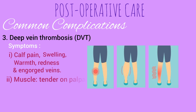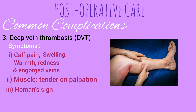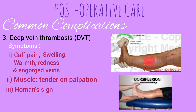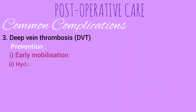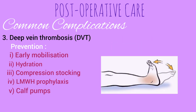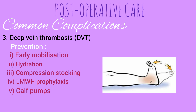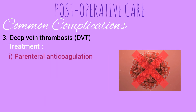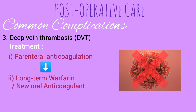Mostly DVT doesn't cause any symptoms, but when it does it can cause calf pain, swelling, warmth, redness, and engorged veins. The muscle may be tender on palpation, and Homan's sign — discomfort or pain behind the knee in the calf muscles upon dorsiflexion of the foot. It can be prevented by early mobilization, hydration, compression stockings to prevent venous stasis, low molecular weight heparin prophylaxis to prevent clotting, and calf pumps — a common exercise advised to bedridden patients. If a significant DVT is formed, it can be treated with parenteral anticoagulation initially, followed by long-term warfarin or new oral anticoagulants.